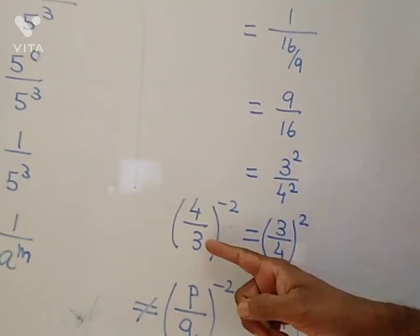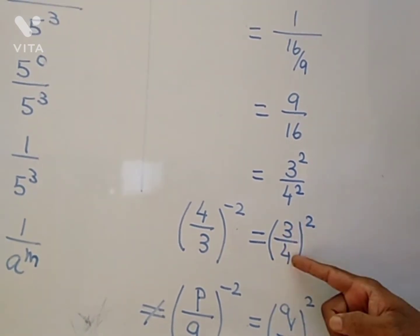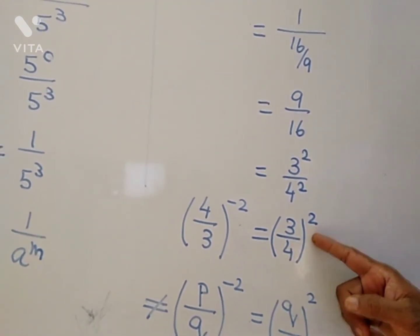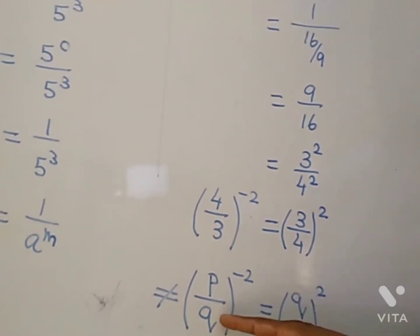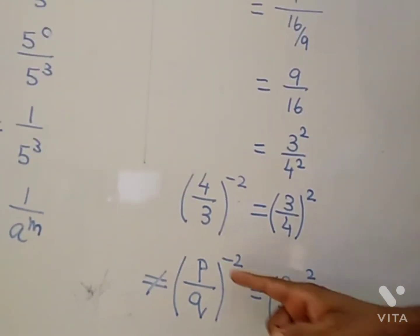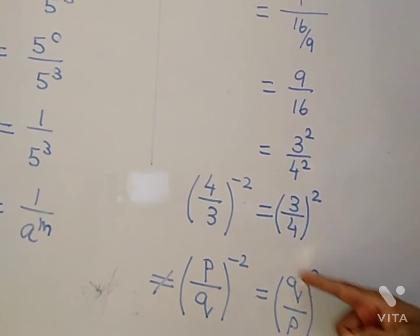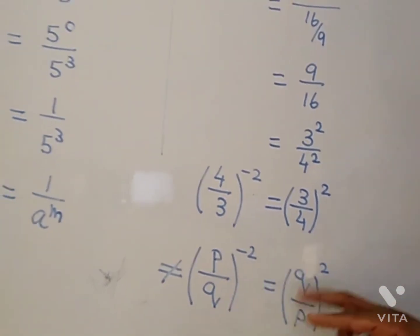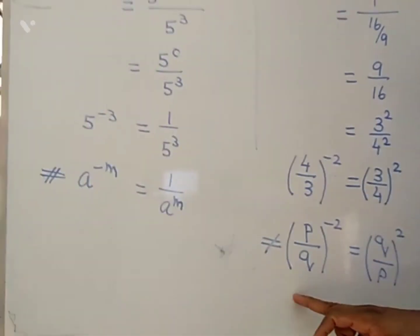This is part of the rule. Power two, if you have p by q to the negative power, the negative power becomes positive, and you flip the fraction.